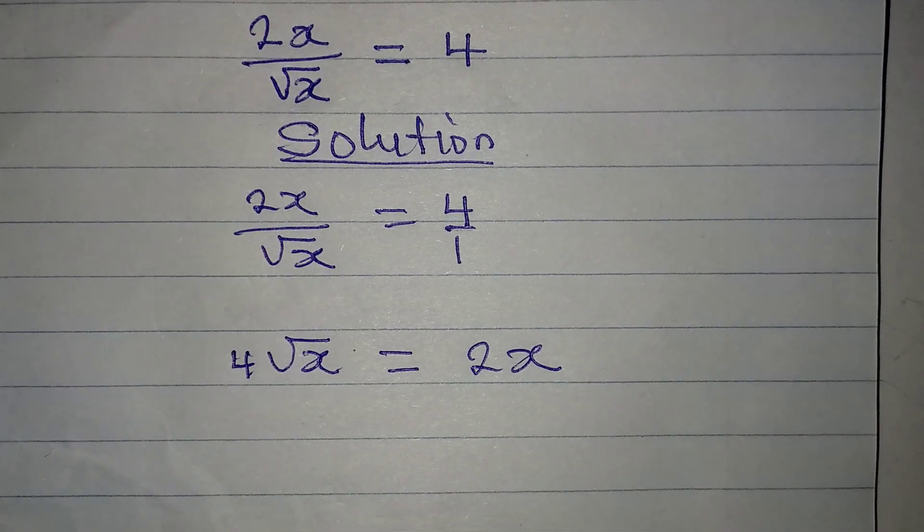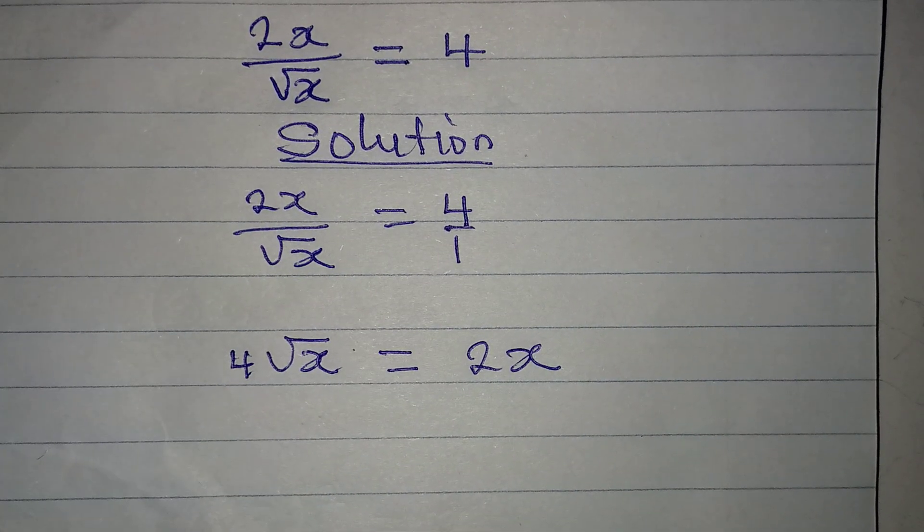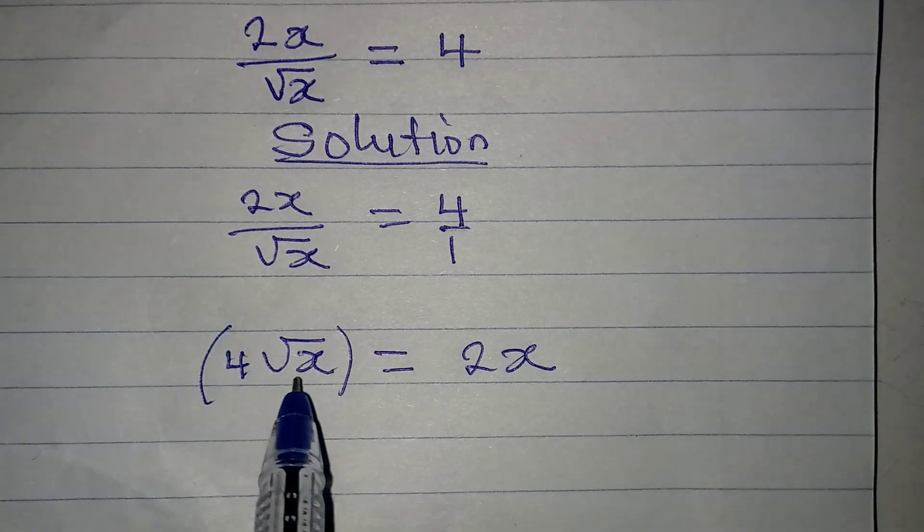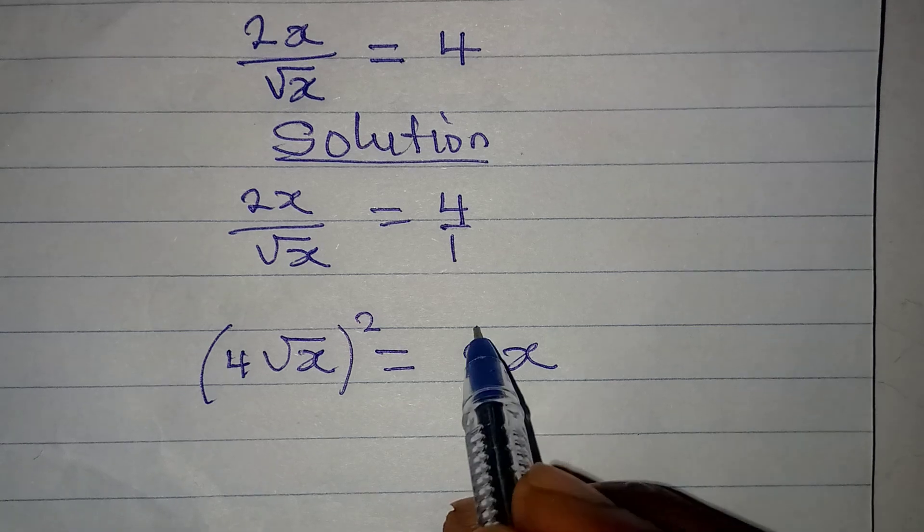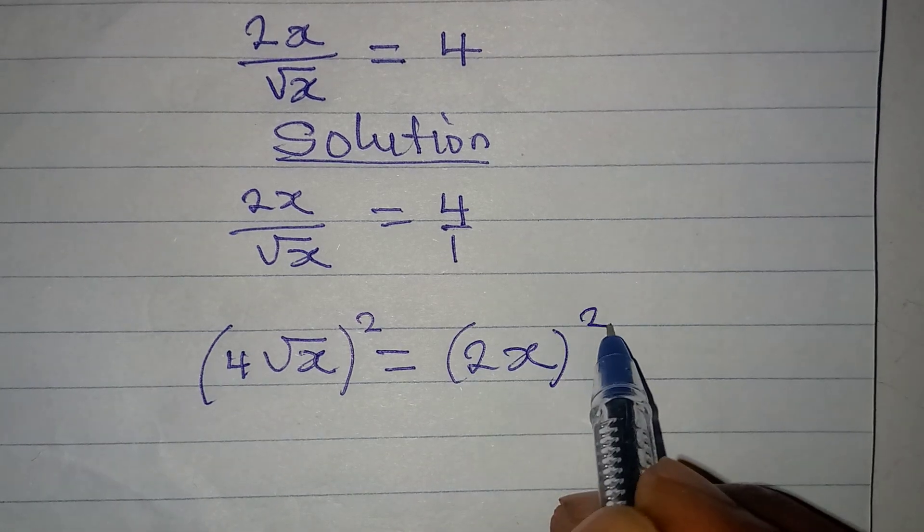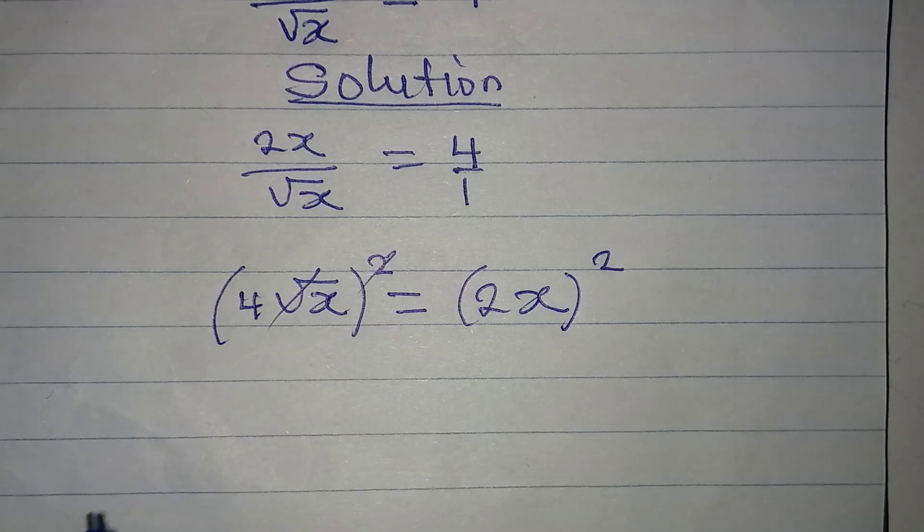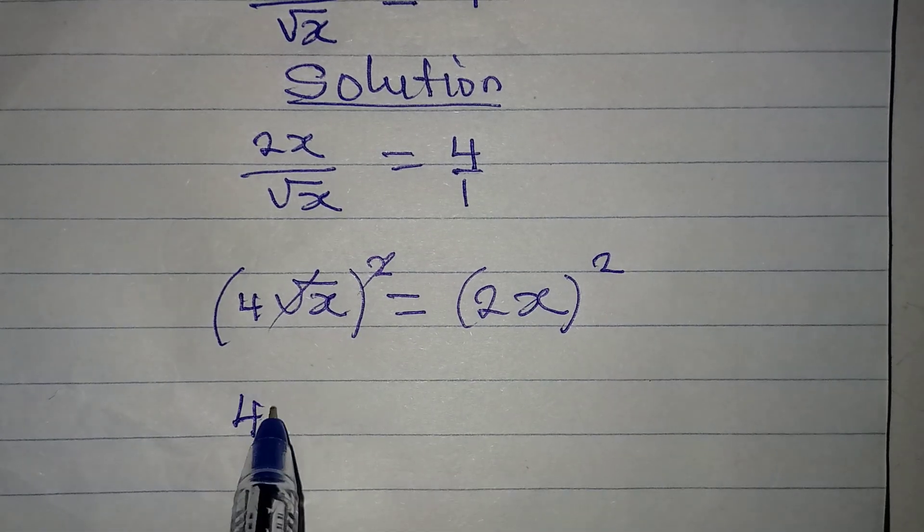Now, what do I do? The first thing I'm going to do is trying to remove the square root from here by squaring this and equally squaring this. Now, this and this will cancel. So, we have 4x.